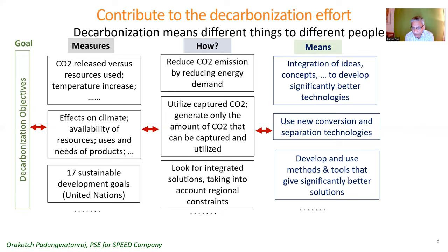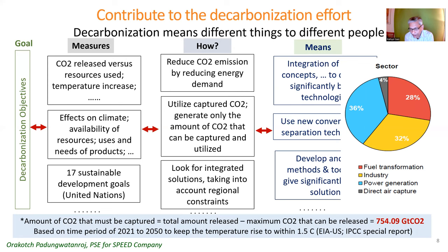PSE has a clear role in achieving these targets. The IPCC special report has proposed that to keep temperature increase within 1.5 degrees Celsius during 2021 to 2050, we need to capture, utilize, and sequestrate 754.09 gigatons of CO2, of which 32% must be done through industry. So we have a target and we have the means.